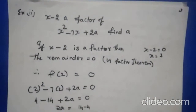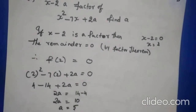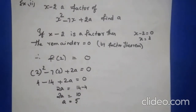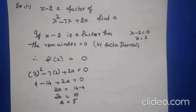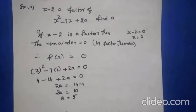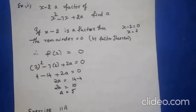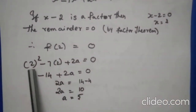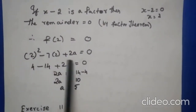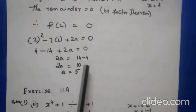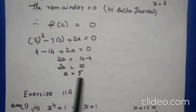Next example: x - 2 is a factor of x² - 7x + 2a. Find the value of a. Since x - 2 is a factor, the remainder is 0. So x = 2 and f(2) = 0. Substituting: 2² - 7(2) + 2a = 0 → 4 - 14 + 2a = 0 → 2a = 10 → a = 5.